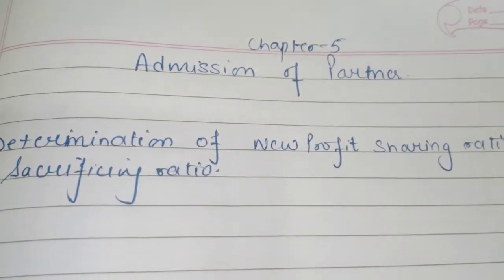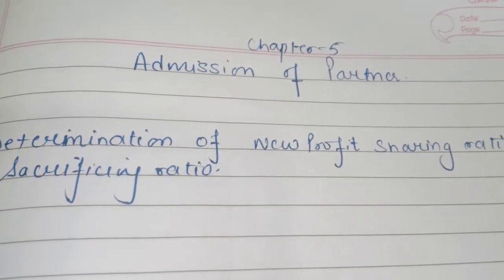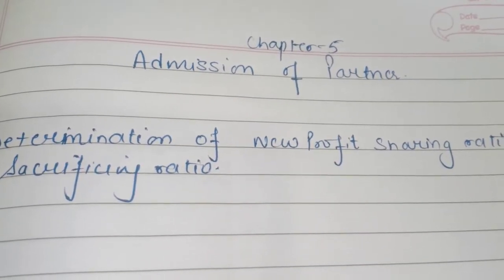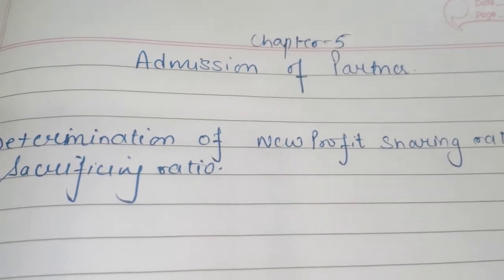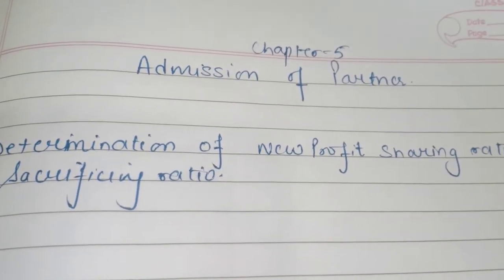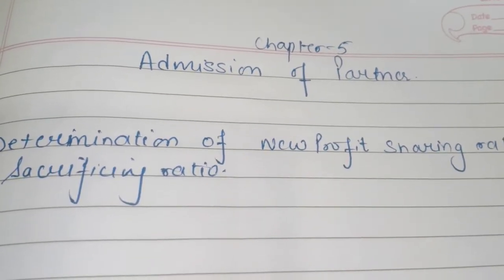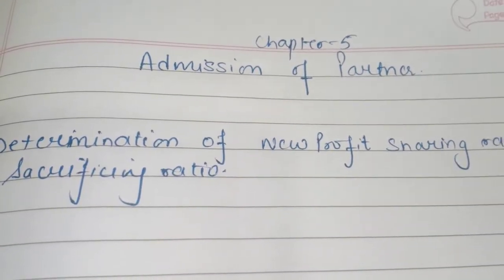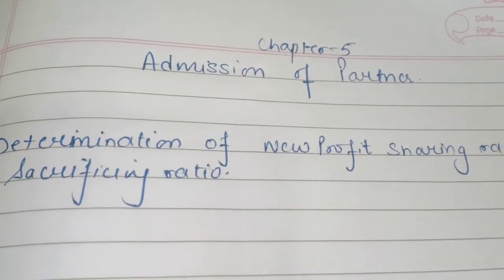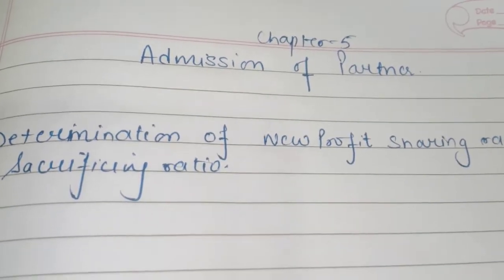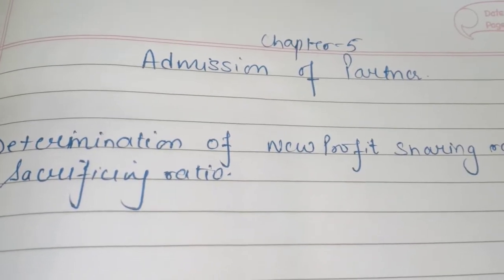Hello everyone and welcome to our channel. Today we are going to start another chapter of accounts — that is admission of a partner. This is a very important chapter having a minimum weightage of 6 marks and maximum weightage of around 10 to 11 marks. So let's start with this chapter.